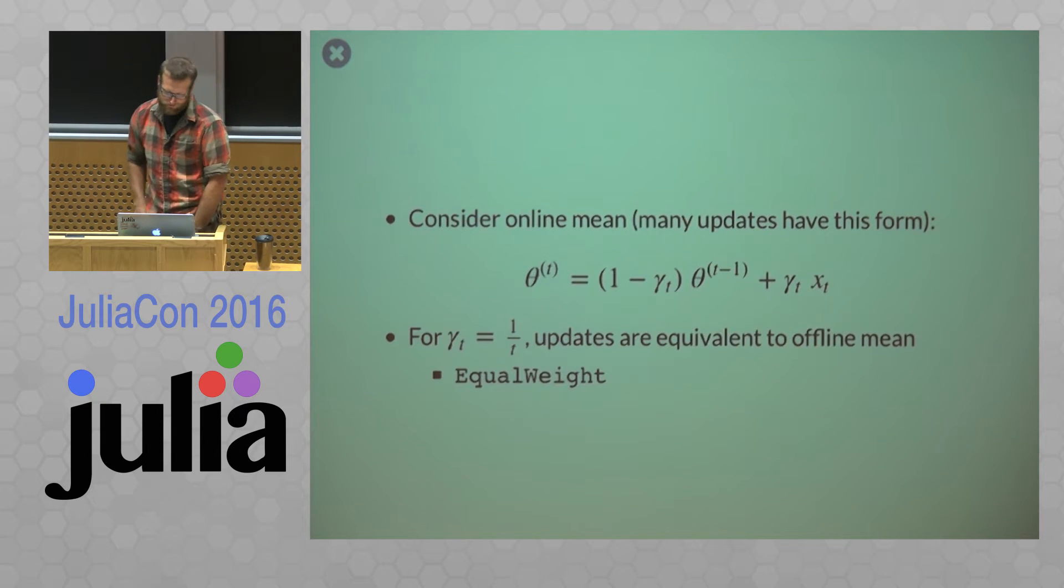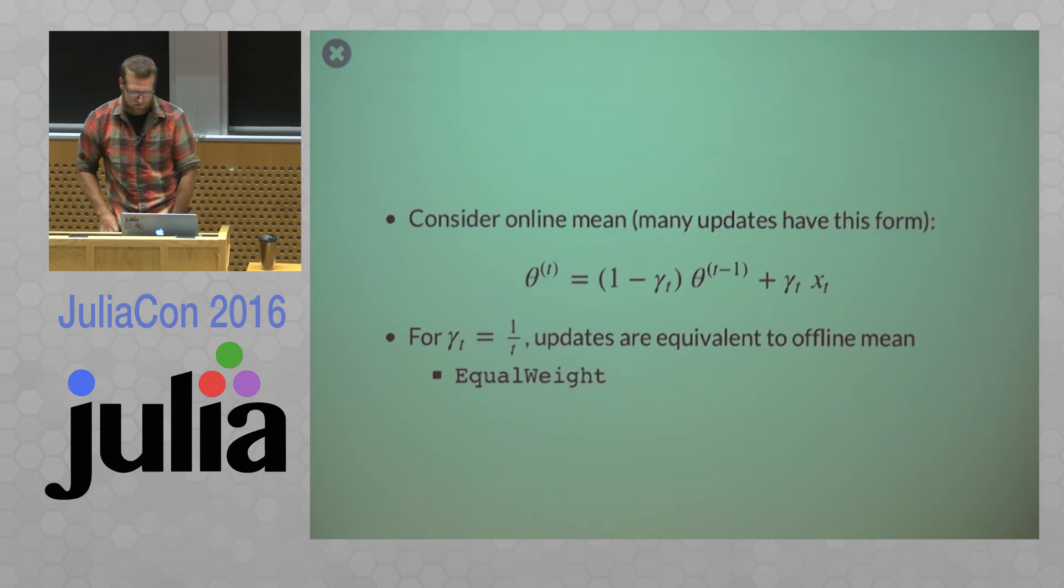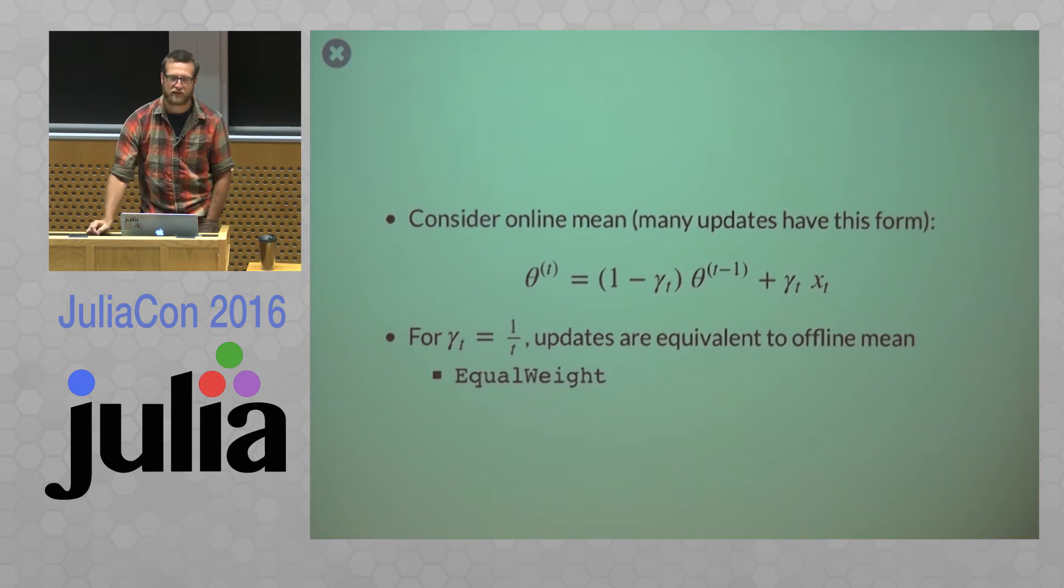So consider an online mean. So many updates have this exact same form. So it's like a weighted average of whatever our parameter currently is and some new value. So we have these weights gamma in there and we're updating our parameter theta. So for gamma t equals 1 over t so updates are equivalent to the offline mean. So since updates are equivalent we're going to call this thing equal weight.